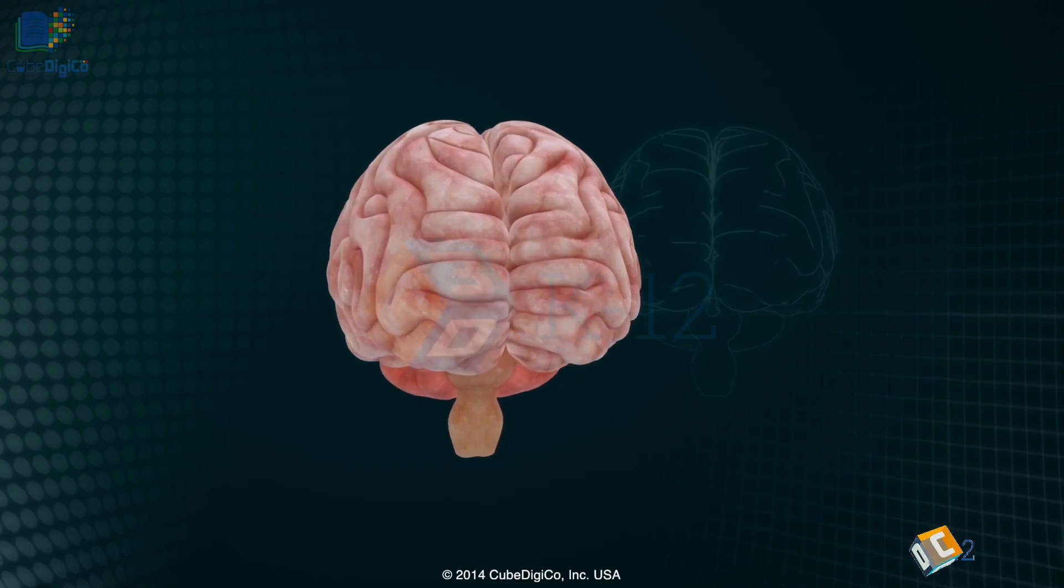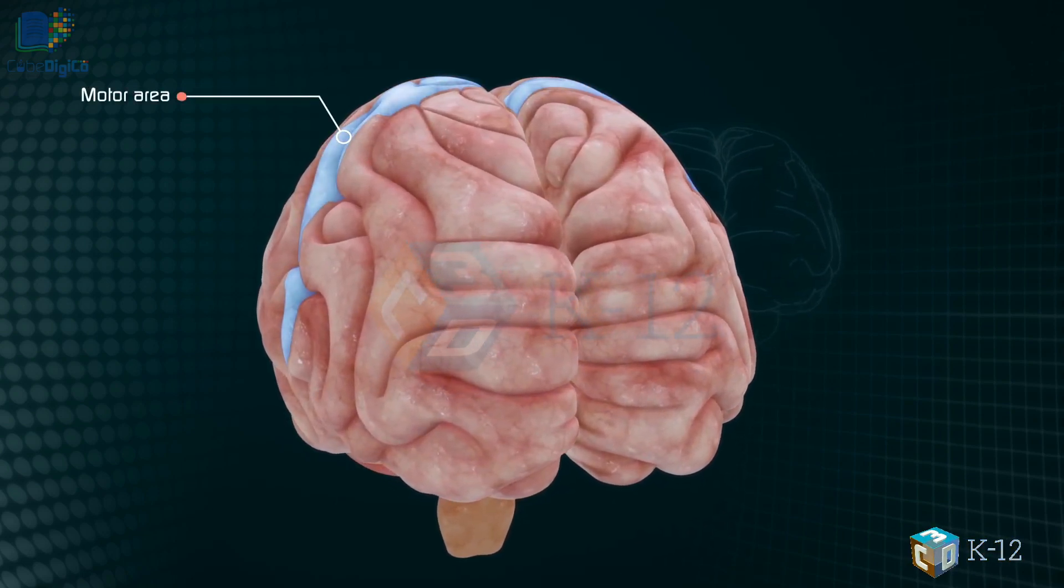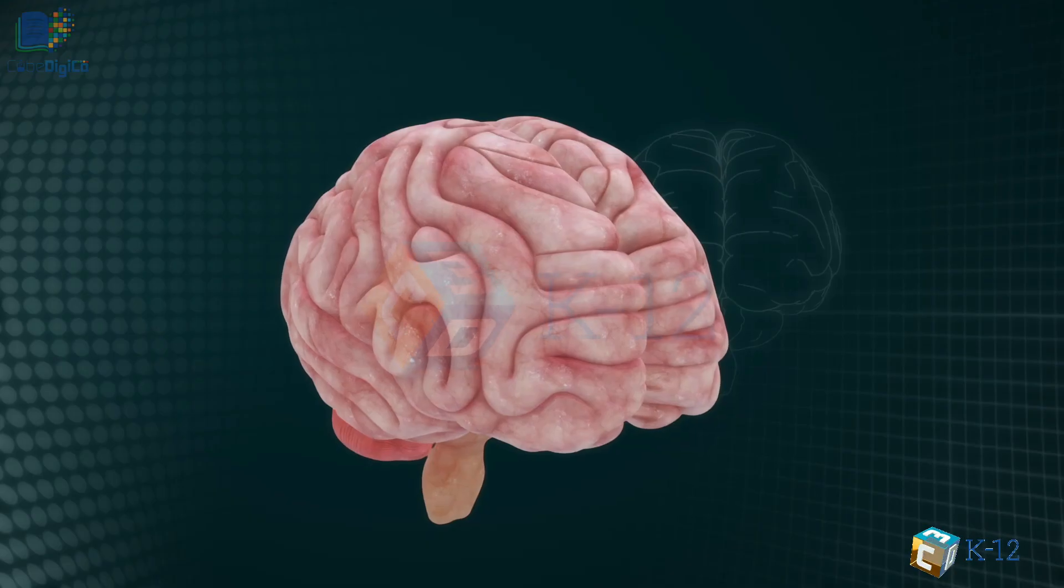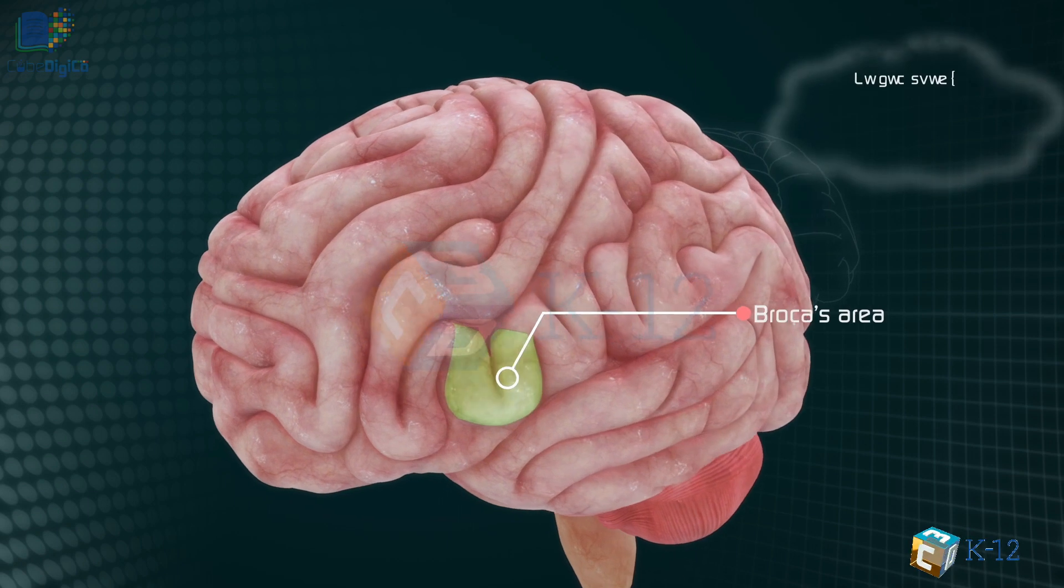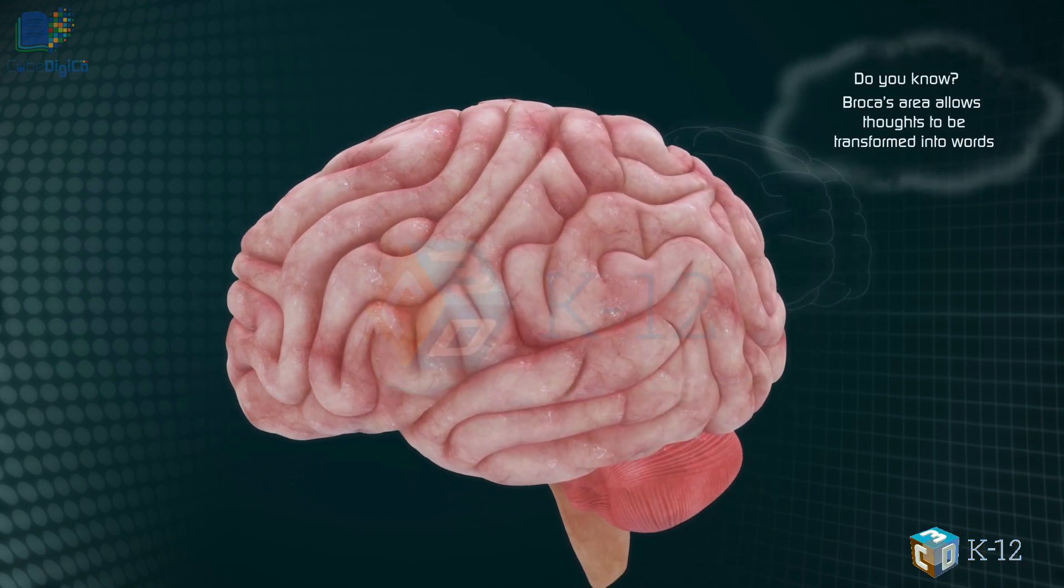In the rear portion of each frontal lobe is a motor area, which helps control voluntary movement. A nearby place on the left frontal lobe called Broca's area allows thoughts to be transformed into words.